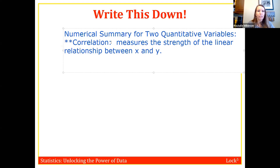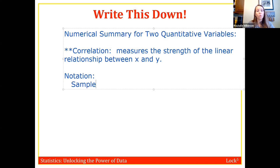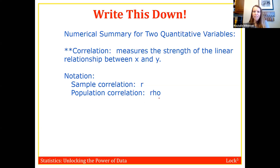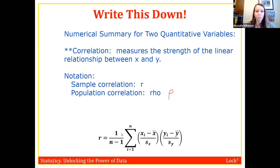For notation: sample correlation is denoted by lowercase r, and population correlation is denoted by rho (ρ), the Greek letter that looks like a smooth P without the curly top. There is a formula for correlation, but we won't be using it by hand in class — I'm showing it because it will help illustrate the characteristics of correlation. So don't write the formula down thinking you'll need to memorize it.